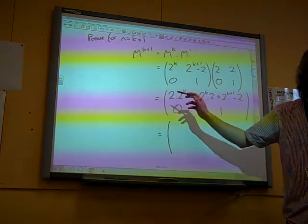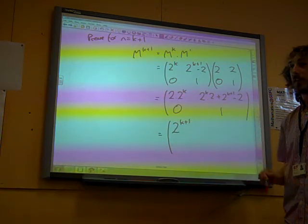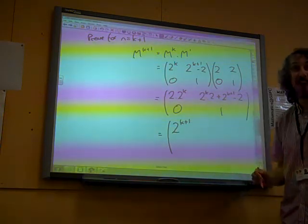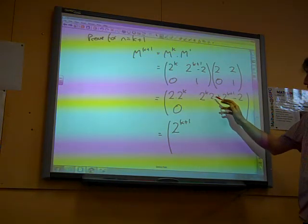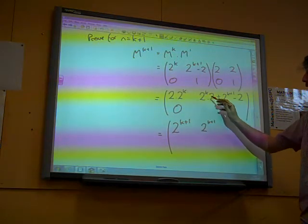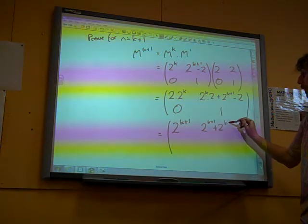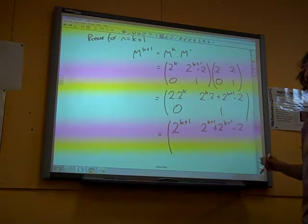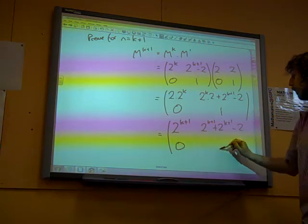2 times 2 to the k? That would be 2 to the k plus 1, wouldn't it? Yes! That's what we wanted. And here, we've got, oh what have we got? Well, we've got 2 to the k plus 1, because that's 2 to the k times 2. We've got another 2 to the k plus 1, and we're taking away a 2 from all of that. 0 and 1.